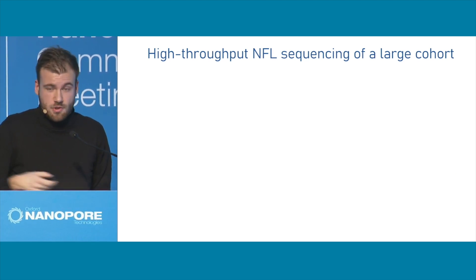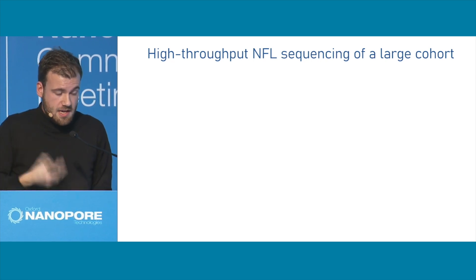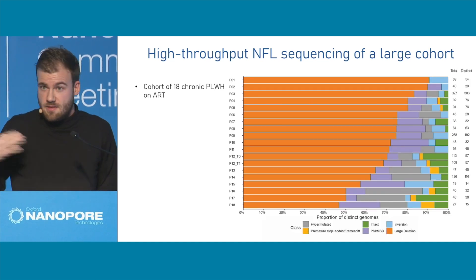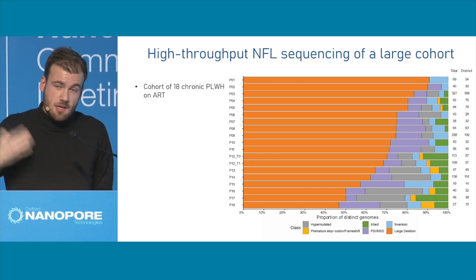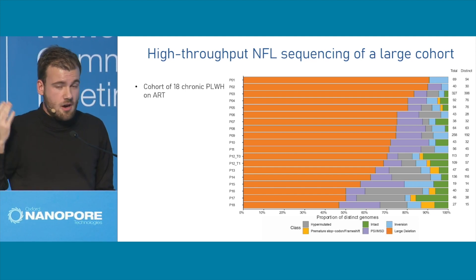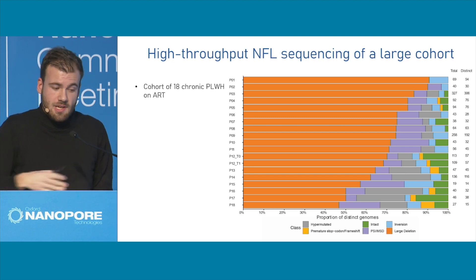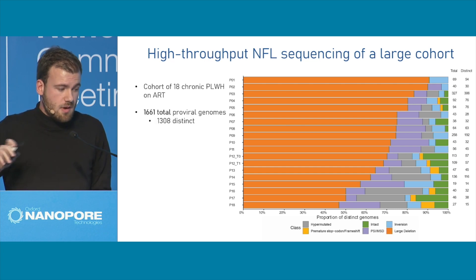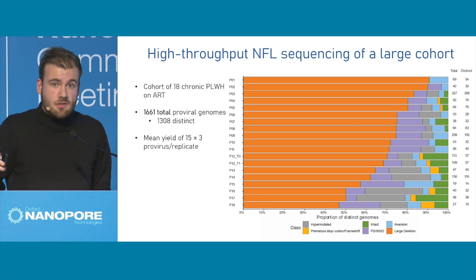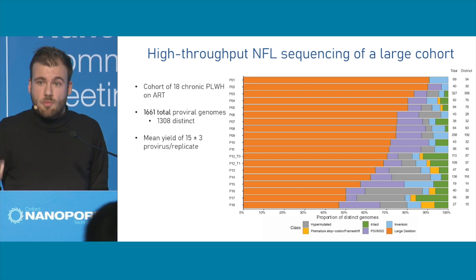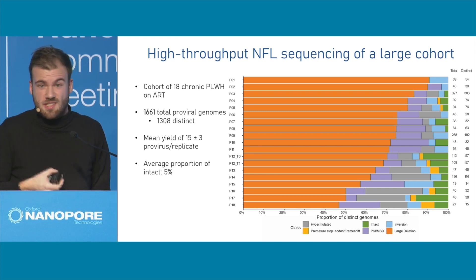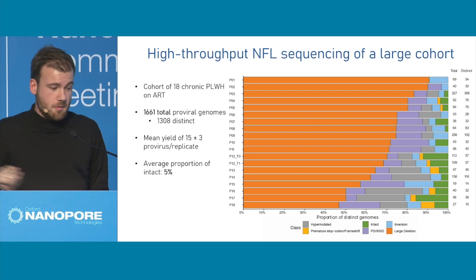We then wanted to go big. We have a cohort of DNA samples from people living with HIV and ran our assay on 18 of them. We sequenced all the viruses and did classification — looking at whether they are intact, deleted, and so on. It's really informative to get this kind of resolution for each individual. We obtained around 1,600 total HIV proviruses across all individuals, with a mean yield of around 15 viruses per PCR replicate — way more than regular methods. Interestingly, the proportion of intact sequences is the same as seen previously, so there's no real bias.